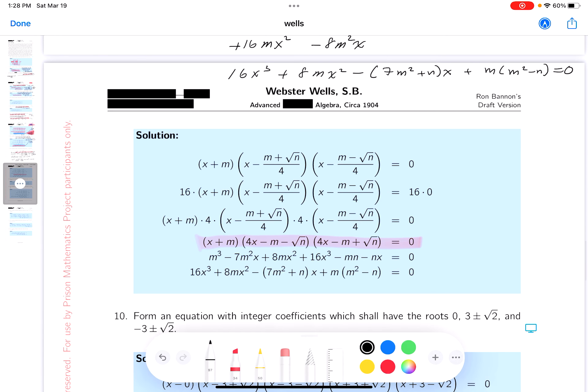Let's get our little magic wand out. See how we did. 16x cubed. 8m x squared. Minus 7m squared plus n x. Plus m times m squared minus n equals 0. We did fine.